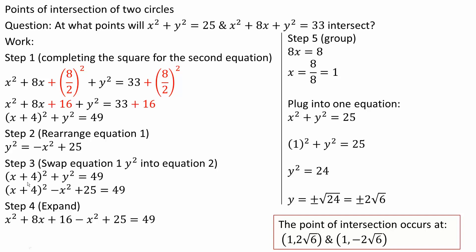Now I expand (x + 4)² = x² + 8x + 16, so the full equation becomes x² + 8x + 16 - x² + 25 = 49. Grouping like terms: x² and -x² cancel, leaving 8x + 41 = 49. Subtracting 41 from both sides gives 8x = 8.